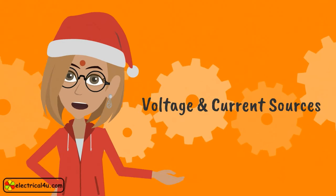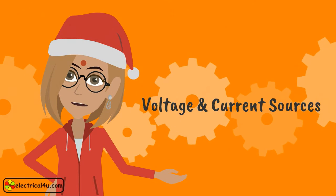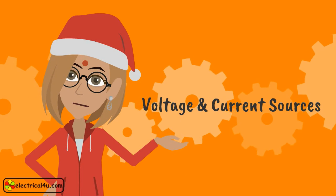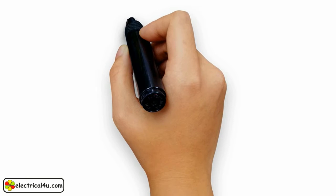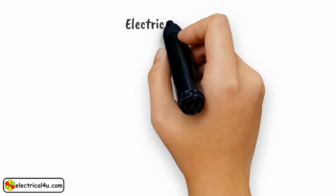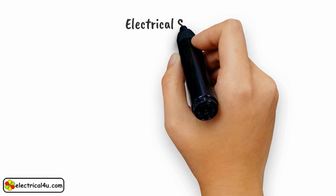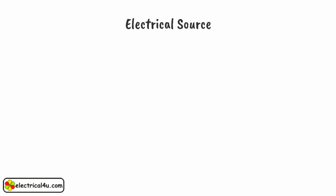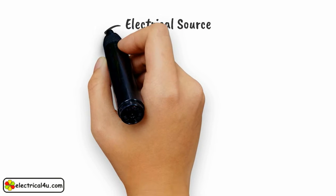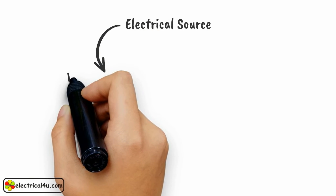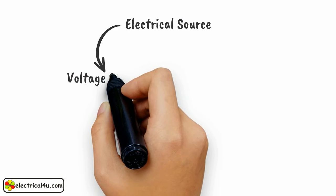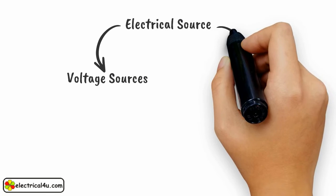Now, we will discuss voltage and current sources. An electrical source is a device which converts mechanical, thermal, chemical, or some other form of energy into electrical energy. There are two types of sources: voltage sources and current sources.